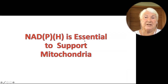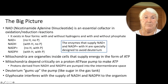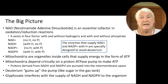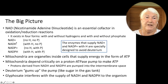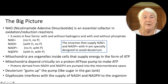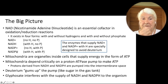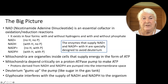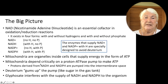My next topic is NADPH, which is essential to support the mitochondria. NAD is nicotinamide adenine dinucleotide, an essential cofactor in oxidation-reduction reactions. It exists in four forms: NAD+, NADH, NADP+, and NADPH — varying by presence of hydrogen and phosphate. The enzymes that supply NAD+ and NADP+ with H are specially designed to avoid deuterium. The mitochondria take advantage of this by pouring that H into the intermembrane space as a driving force behind ATP generation. Mitochondria supply energy to the cell as ATP and depend critically on a proton ATPase pump. The protons derived from NADH and NADPH are major sources to drive that pump.